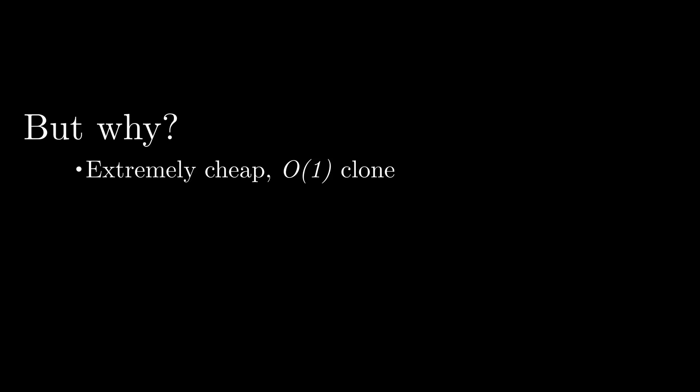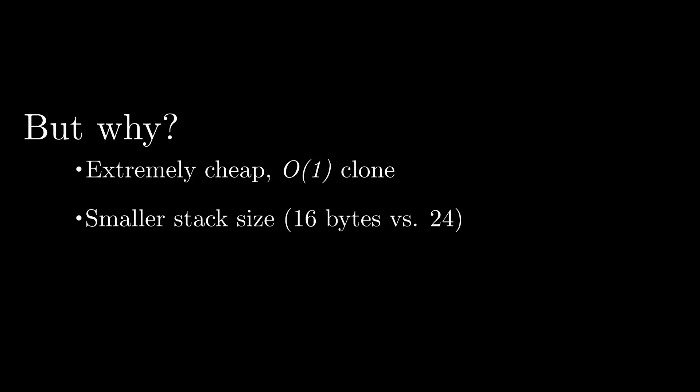It doesn't involve any memory allocations, which normally cloning a Vec does. The second reason is that Arc<slice<T>> is only 16 bytes — it only needs to store a pointer and a length, unlike a Vec which needs to store a pointer, a length, and a capacity, making it 24 bytes. That's only an eight-byte difference, but if you're storing lots of these things in a struct or array, that extra memory adds up and can decrease your cache locality.